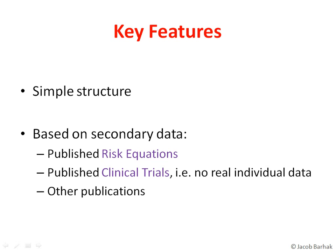The reference model has a simple structure to allow future enhancements. It's based on secondary data — data that has been processed by others and published. Those publications include risk equations and clinical trials. The publications about clinical trials do not contain real individual data, making it much easier to share this information and allowing the reference model to access more population information.